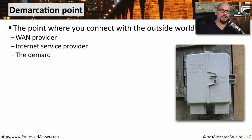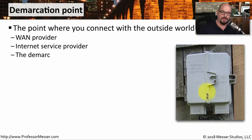When you're working with a third party network provider, there needs to be some point where the handoff is made between the provider's network and your internal network. This is the demarcation point, or the demarc. It's often a network interface on the outside of your building, or it may be an interface location on the inside of your building.